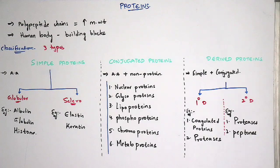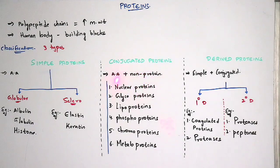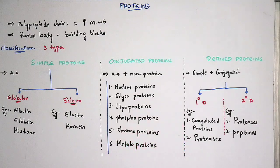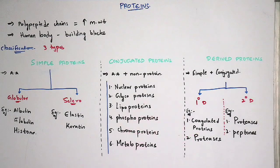Conjugated proteins are classified into six types. These are mainly classified based upon the amino acid type. The six types are: nuclear proteins, glycoproteins, lipoproteins, phosphoproteins, chromoproteins, and metalloproteins. Nuclear proteins are proteins like nucleic acids — for example DNA and RNA. Metalloproteins are proteins mainly attached to a metallic group. Chromoproteins consist of a color component — note that chromo refers to color, not chromosomes. Phosphoproteins are attached to a phosphate group.